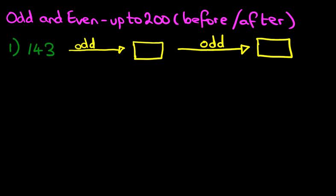So we've got the number 143. And the question is, which odd number comes after this one and the odd number after that one? So let's have a closer look at the number we have here, 143. Now it's important that we work out whether this number, 143, is odd or even.